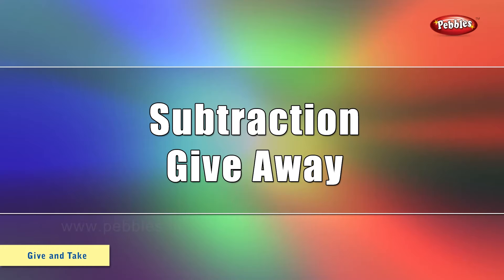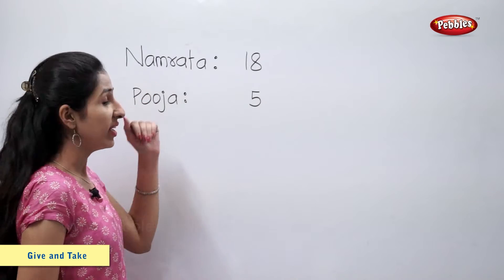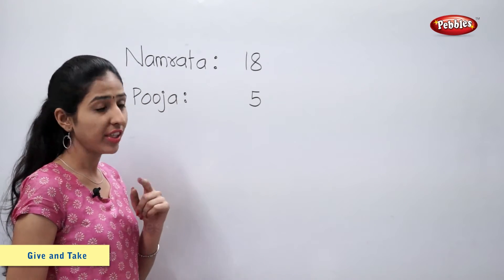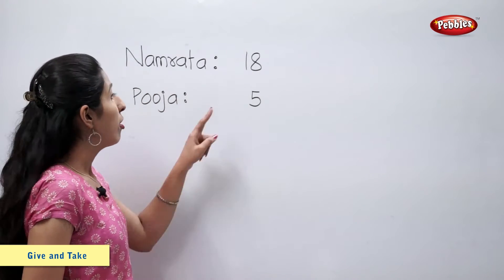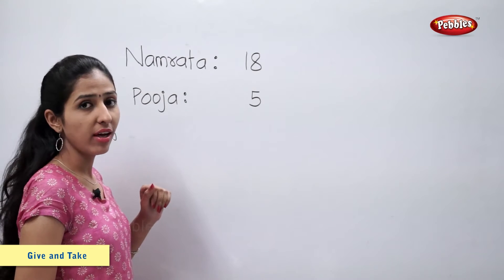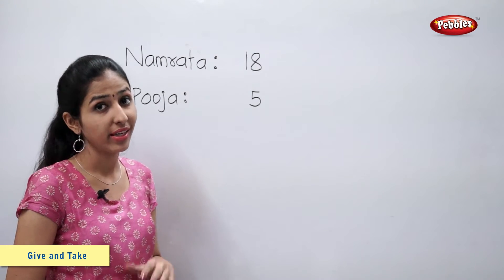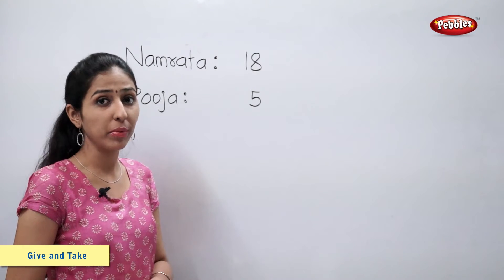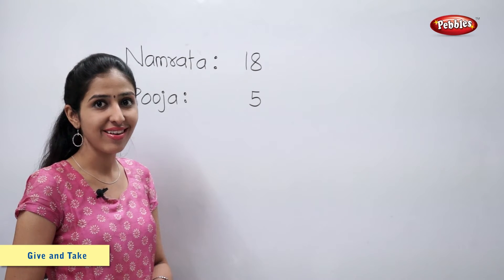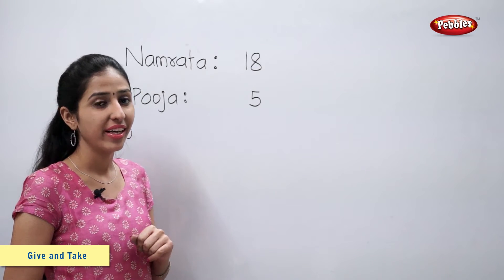Subtraction. Give away. Namrata had 18 pearls. She gave 5 pearls to Pooja. Now tell me, students, how many pearls are left with Namrata? Let's find out.